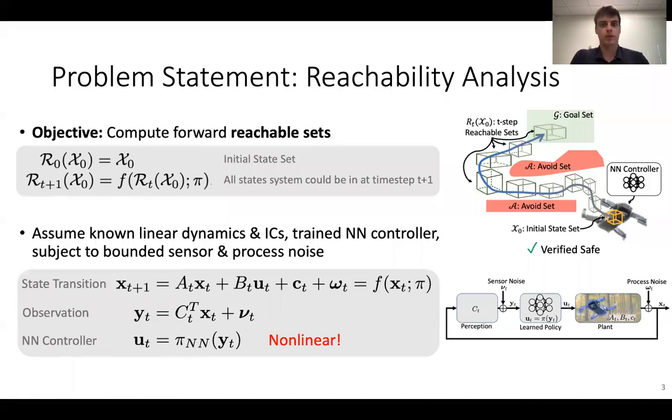So the particular problem that we addressed in this paper is called reachability analysis. In this picture, you could imagine having a robot like a UAV and it starts in some known initial state set. And you want to understand what are all the possible states that the system could occupy in the future.